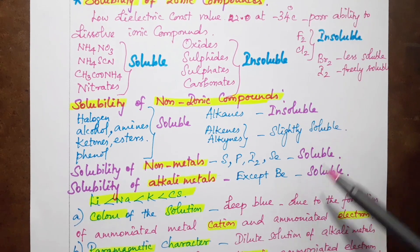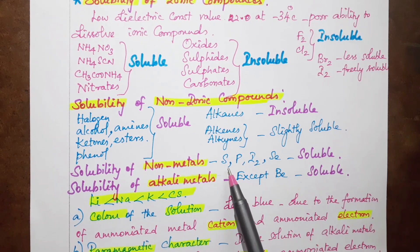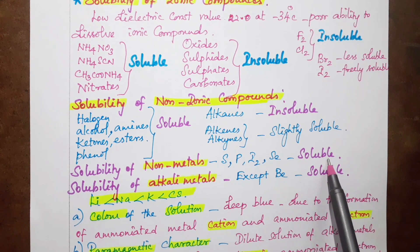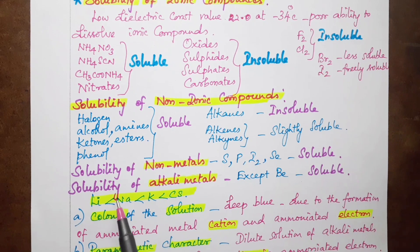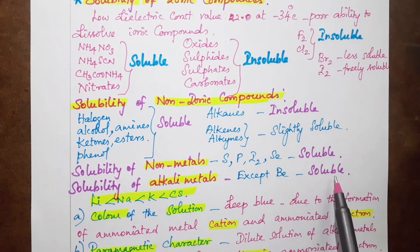Now we look at the solubility of non-metals. Non-metals are exceptions - sulfur, phosphorus, iodine, and selenium are soluble in liquid ammonia. For solubility of alkali metals, except beryllium, all alkali metals are soluble.